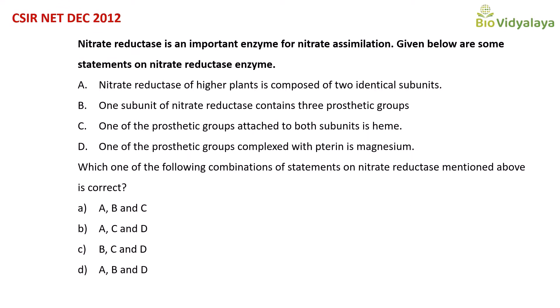This is the CSIR NET December 2012 question. Nitrate reductase is an important enzyme for nitrate assimilation. Given below are some statements on nitrate reductase: Statement A — nitrate reductase in higher plants is composed of two identical subunits. Statement B — one subunit of nitrate reductase contains three prosthetic groups. Statement C — one of the prosthetic groups is attached to both subunits, and that is heme. Statement D — one of the prosthetic groups complexed with taurine is magnesium. Which combination of statements is correct?